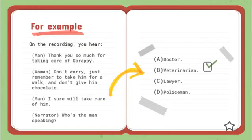Answer is B. Based on the clues, he suggested to the woman to take Scrappy for a walk. After watching this video, you can move on to the practice section by following the skills mentioned in the video.